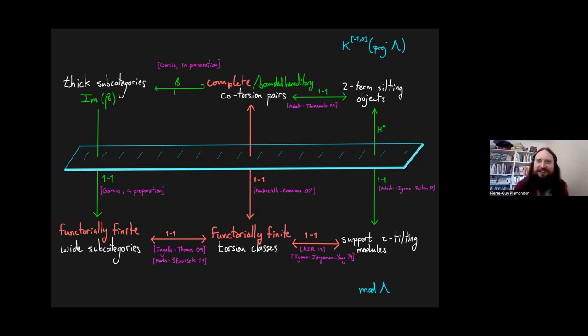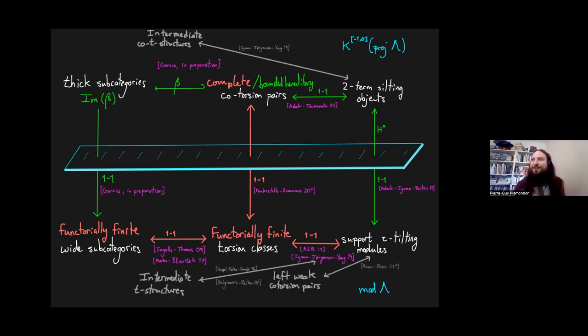Now, as I said, the looking glass deforms things. If you start from a very large thick subcategory and you go through the looking glass, you will get a very small wide subcategory, kind of orthogonal to each other in a certain sense. Now, this slide is getting crowded, but if you wanted, you could fill it with lots of things, which I don't have time to talk about. You could talk about weak cotorsion pairs, t-structures, co-t-structures.